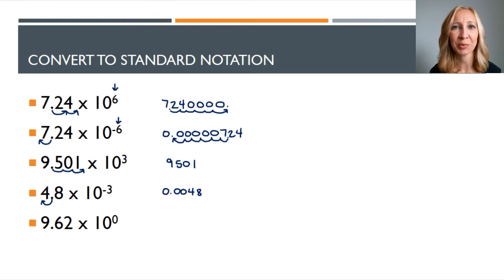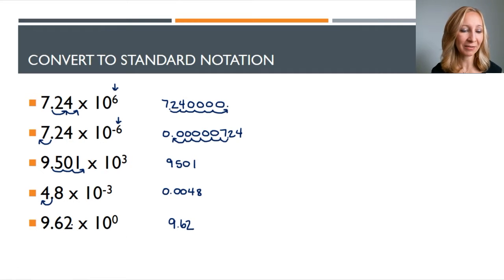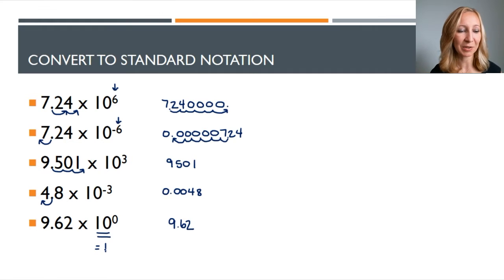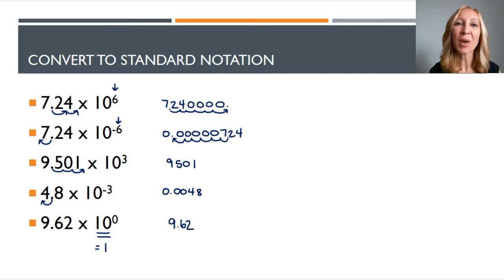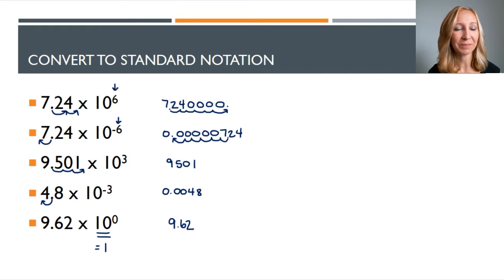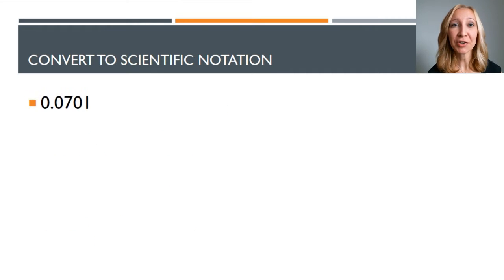Here's the last one — it's kind of tricky and actually really pointless to write in scientific notation: nine point six two times ten to the zero. If the exponent is negative you're dividing by ten, if it's positive you're multiplying by ten — so what are you doing when the exponent is zero? You're not doing anything to that number. So nine point six two times ten to the zero is really just nine point six two.